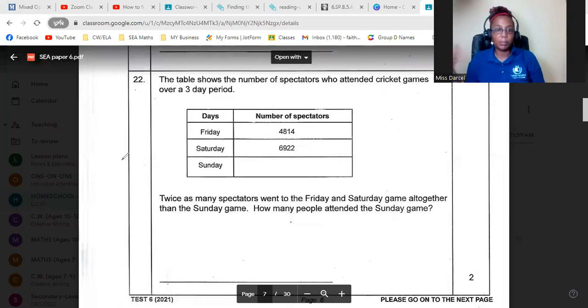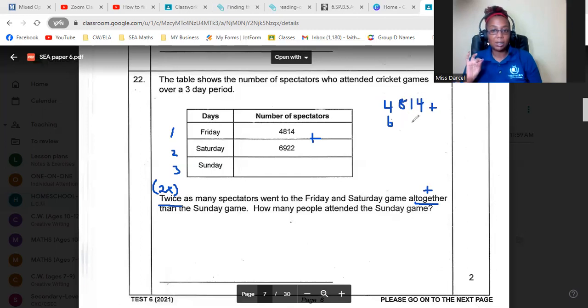Number 22. Don't forget, pause and unpause when you get the answer. The table shows the number of spectators at cricket games over a three day period. Twice as many, that's a keyword clue, so that means two times, as many spectators went to the Friday and Saturday game all together, that's another keyword clue, so that means some sort of adding, than the Sunday game. How many people attended the Sunday game?